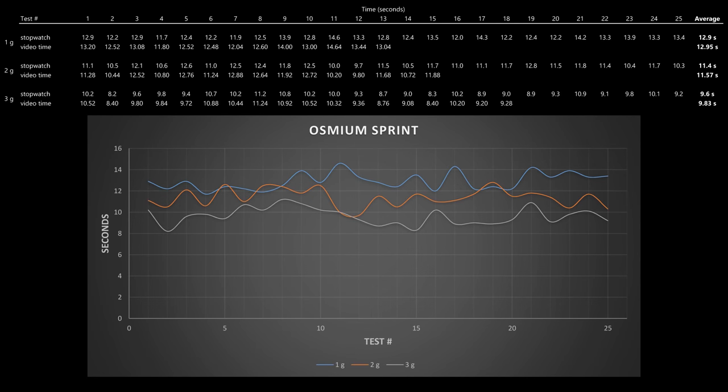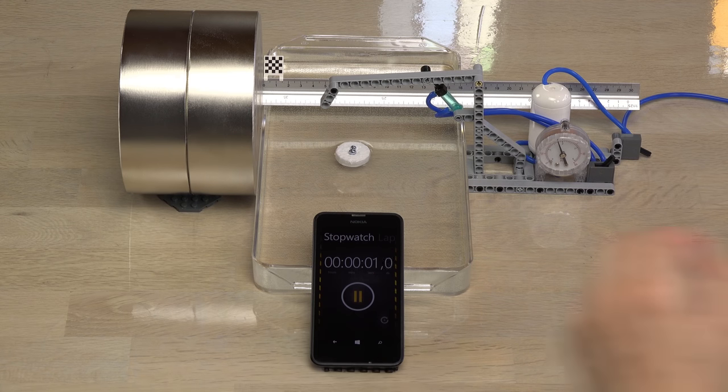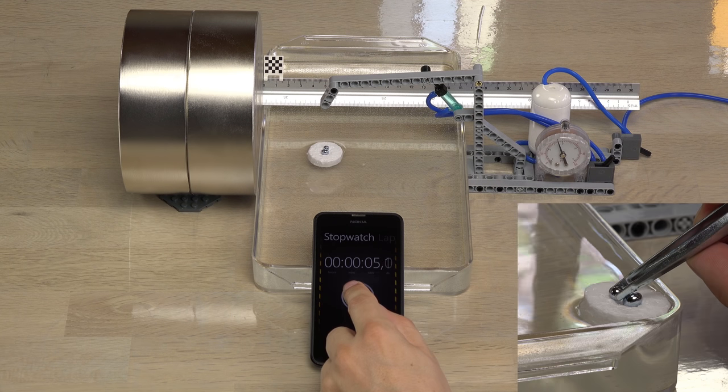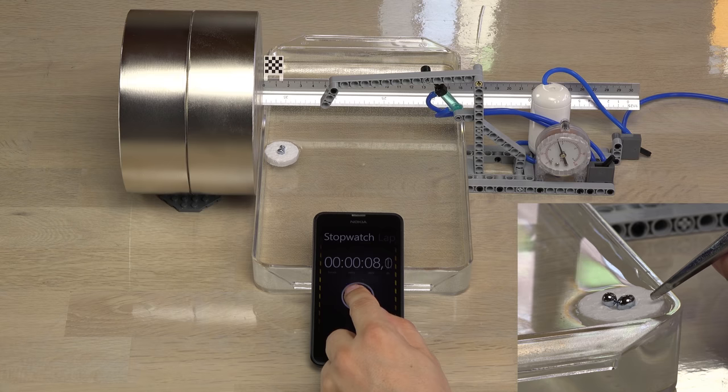But, as shown here, I wasn't way off with the stopwatch. Now, how do I explain that the 3 gram sample is the fastest? Look at it go. It is sitting very low in the water, so it must have more drag than the other two.